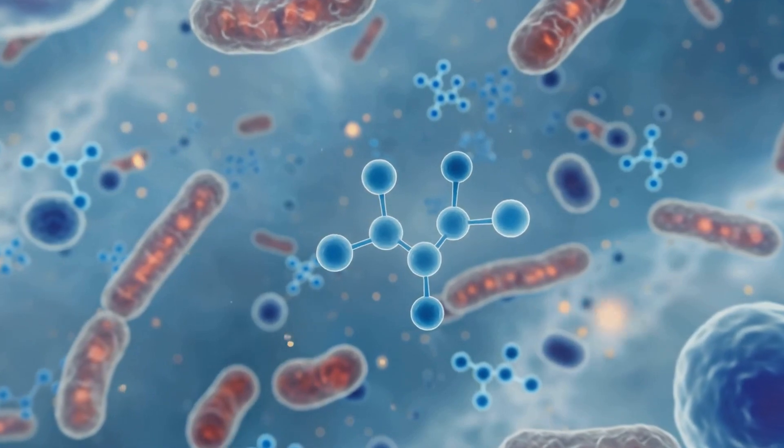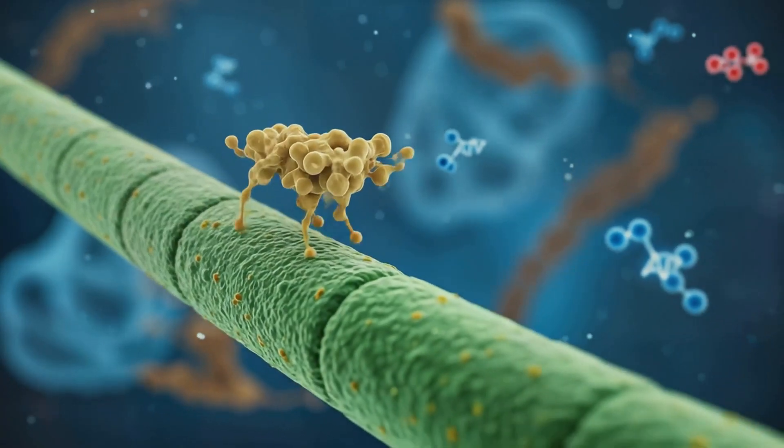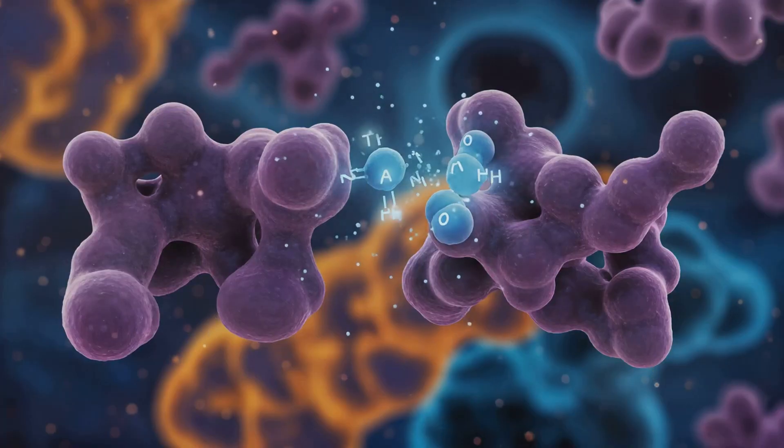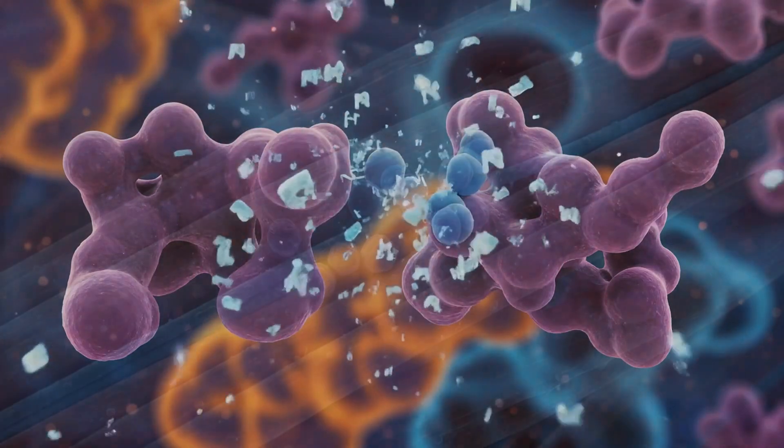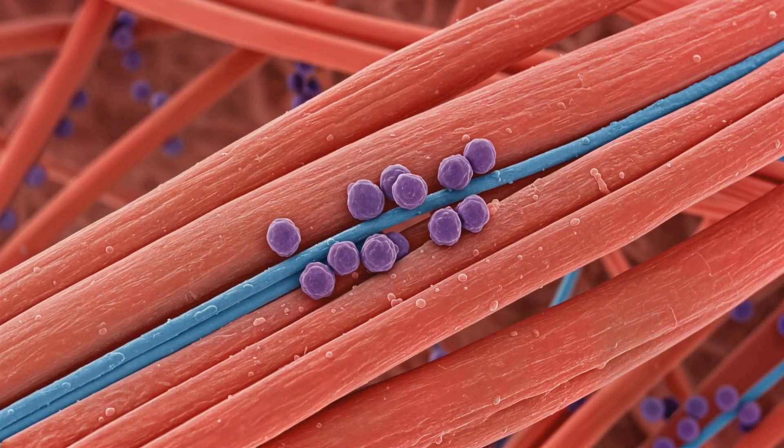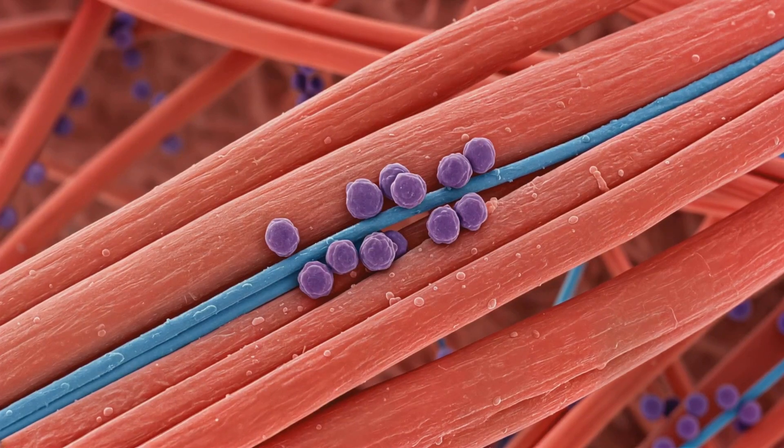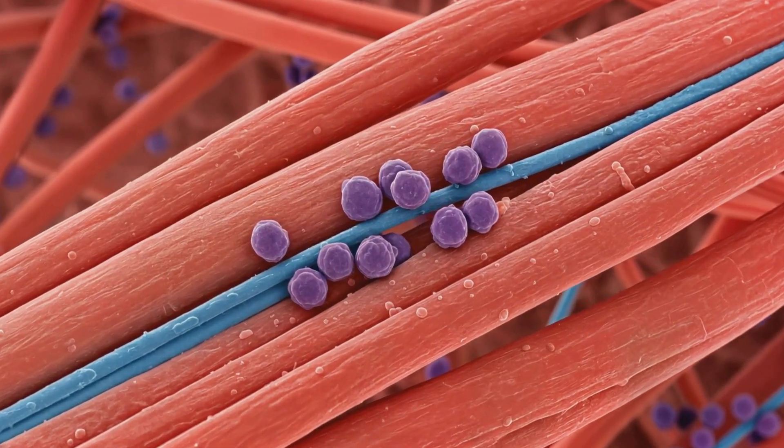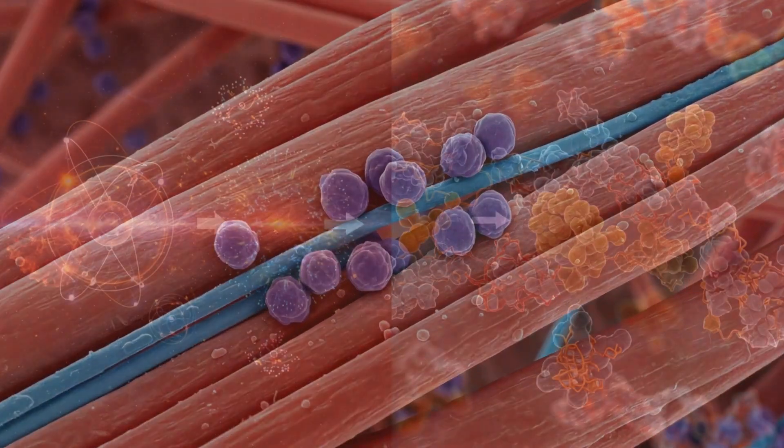These proteins walk along filaments using ATP, changing shape with each step. Muscle contraction: in muscles, this ATP powers the myosin heads to attach, pivot and release actin filaments. This is what causes your muscles to contract.